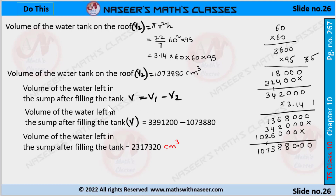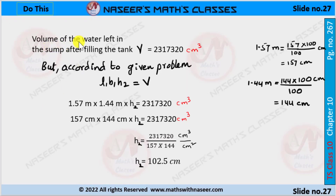Now we find the volume of the water left in the sump. V is equal to V1 minus V2. After substituting V1 and V2 values: 33,91,200 minus 10,73,880. After subtracting this we get 23,17,320 cubic centimeters. This is the volume of the water left in the sump after filling the tank.